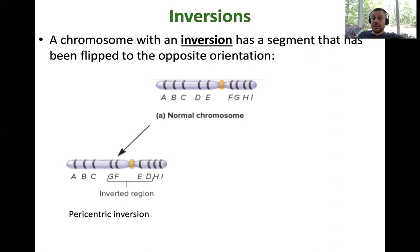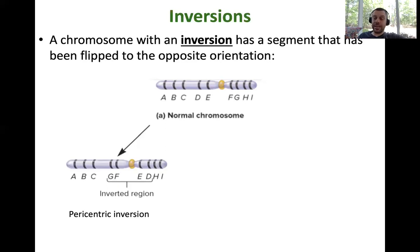The first way is called a pericentric inversion. This type of inversion includes the centromere. I always used to remember that by the fact that centromere has an E in it, and so does the first part of the word pericentric. You can see there's a breakpoint right outside of D and right outside of G, and the whole middle part flipped around as shown here.